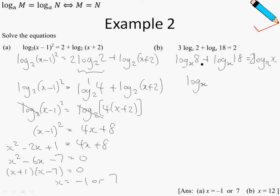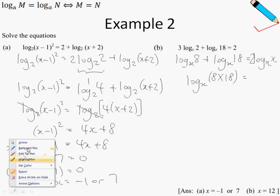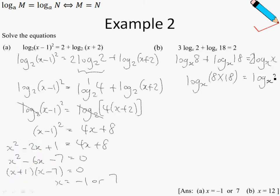So log base x 8 plus log base x 18 is just log base x of 8 times 18. And this is just log_x x squared. If you're wondering where the square came from, I bring up the 2 to become the power for x. And 8 times 18 is simply 144.